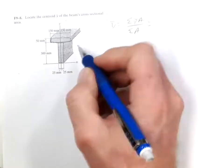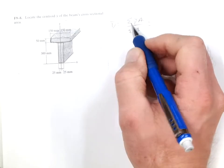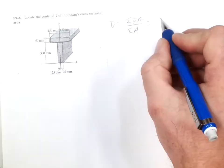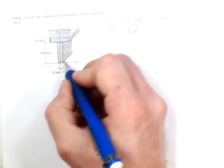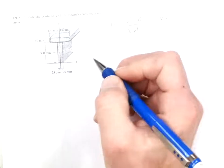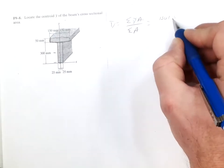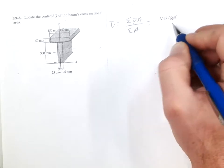And so y bar to the first one from here is going to be 150. So 150 is the distance to the midpoint. And then the area then is 50 times 300.